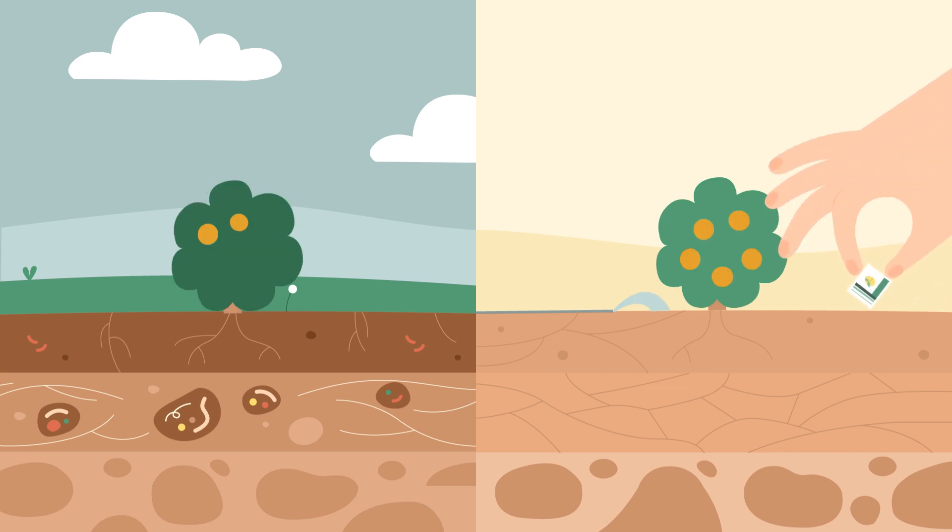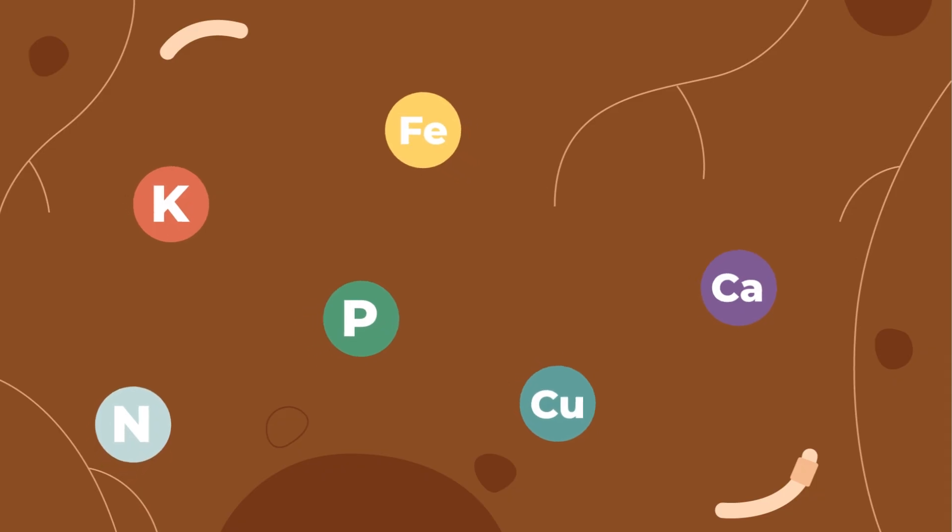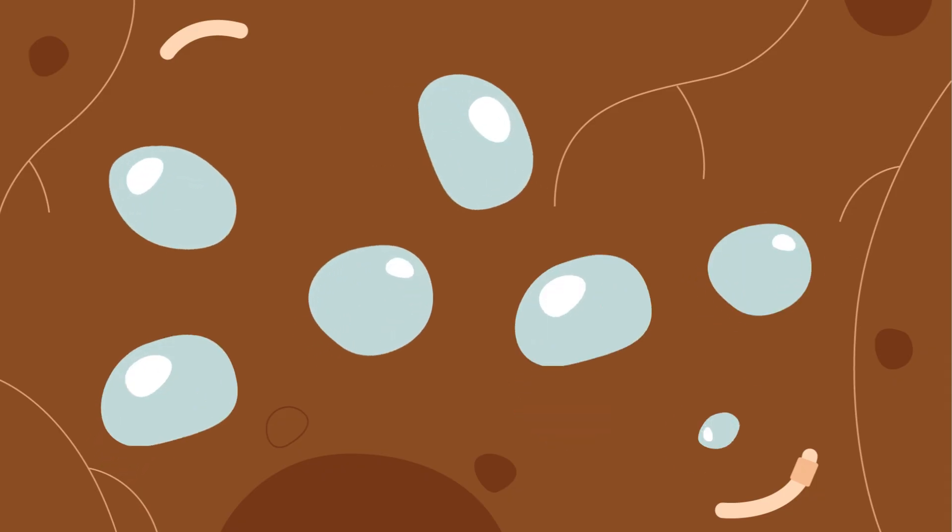But once mature, a regenerative tree begins to thrive. Its soil becomes a powerful system for nutrient absorption and digestion. It now works as a sponge, absorbing and retaining water. Its roots develop communication channels with their neighbors, building networks that share nutrients and resist threats.